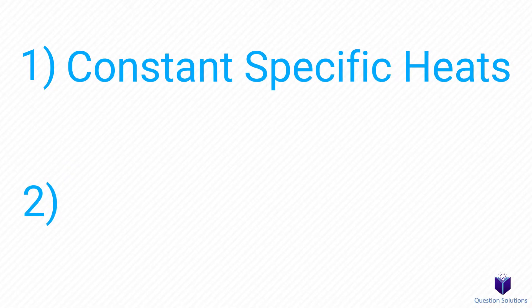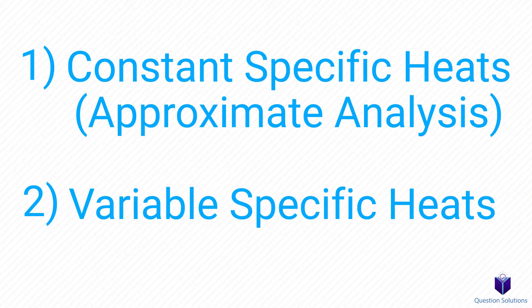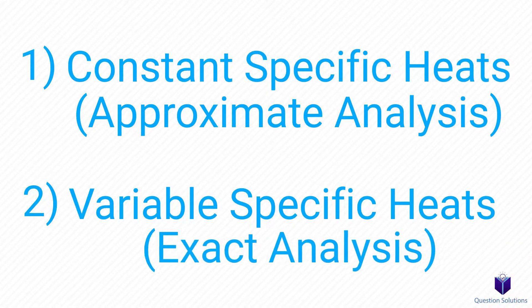When it comes to entropy and ideal gases, there are two methods you can use to solve problems. The first is called the constant specific heats method, also called approximate analysis. The next is the variable specific heats method, also called exact analysis.